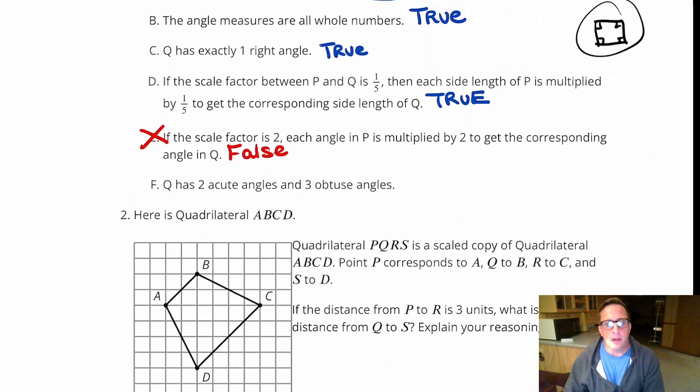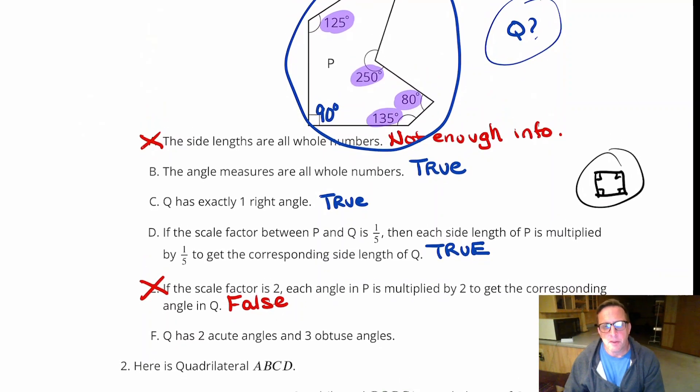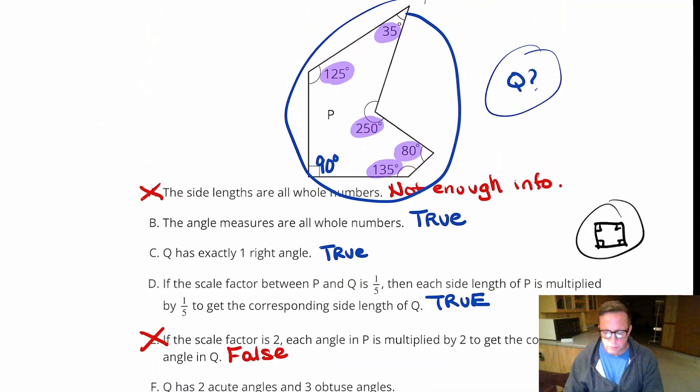But the angles are not going to scale. Side lengths do, though. If Q has two acute angles and three obtuse.